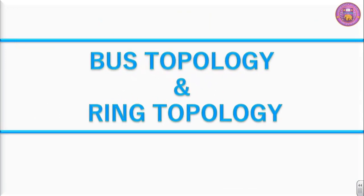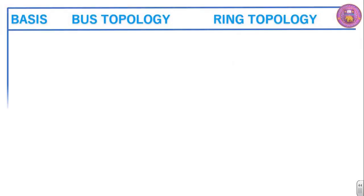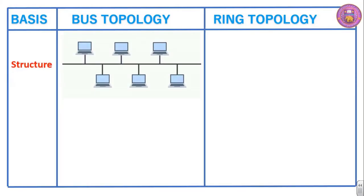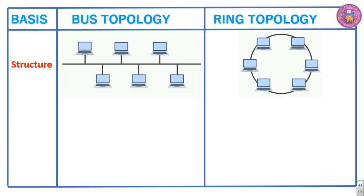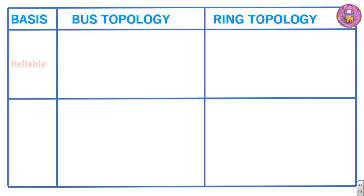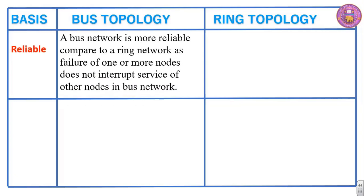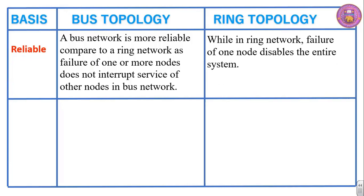The next comparison is bus topology and ring topology. Structure: in bus topology the structure is simple — one main cable with a number of devices attached. In ring topology, computers are attached to each other in ring formation. On the basis of reliability, a bus network is more reliable than a ring network, as failure of one or more nodes does not interrupt service of other nodes. In ring network, failure of one node disables the entire system.